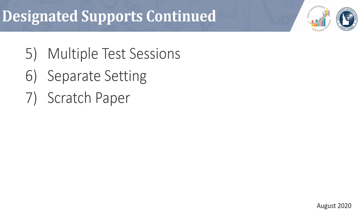Multiple test sessions, as an embedded designated support, allows the proctor to administer the IRI subtests over the course of multiple days. The proctor should be familiar with the IRI to ensure the student is prompted to stop at the appropriate stopping points between subtests. Beginning a subtest without reaching the end before stopping will prompt the subtest to restart from the beginning the next time the student logs in. Providing a separate setting for administration allows for administration to groups smaller than five students or one-on-one. Scratch paper is available as a designated support for the spelling subtest only, and should be destroyed following test administration to adhere to security protocols. Additional information about available designated supports and their use can be found in Table 3 of the IRI TAM.